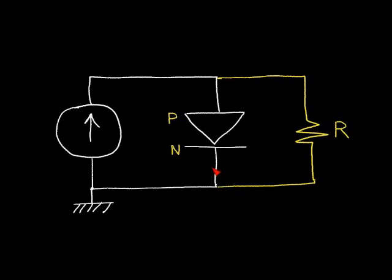In this video I want to present the solar cell model and explain why we have two currents associated with this particular model. We have a current called a diffusion current and another called a drift current. This is an extension of previous videos on the PN junction diode, so if you have difficulty, go to ewebpal.org and review those previous PN junction diode videos.